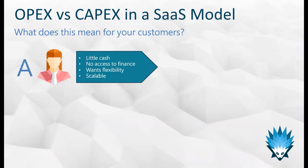The first example is Customer A, who is usually going to be a small business — most likely a startup. They're going to have little cash and won't be able to source huge amounts of finance to cover large upfront costs. They're going to want flexibility. The business might be working in one country now but could be expanding to new geographies. It's also scalable — you might only be 10 or 20 employees at the moment but could be growing into a larger organization in the future.